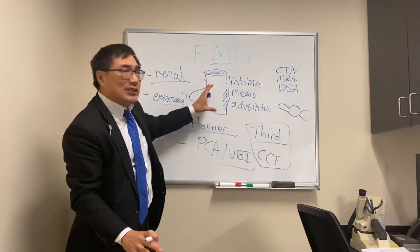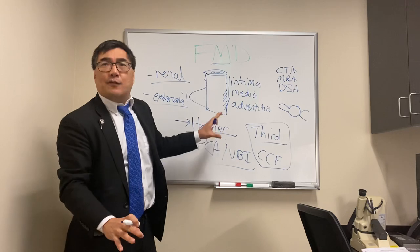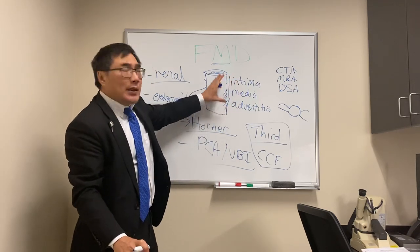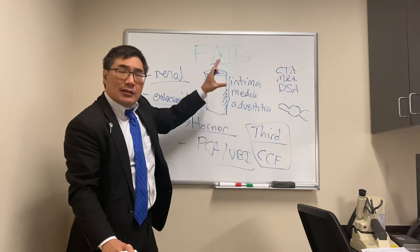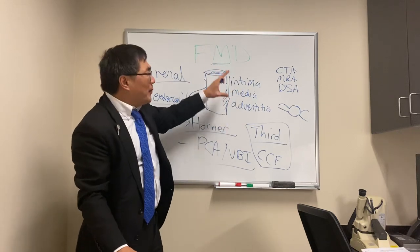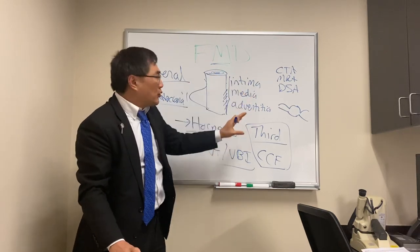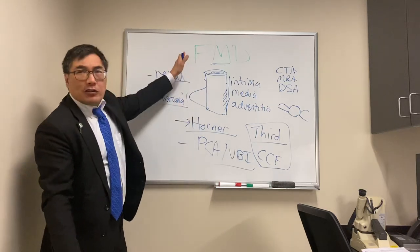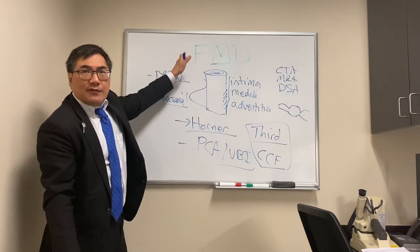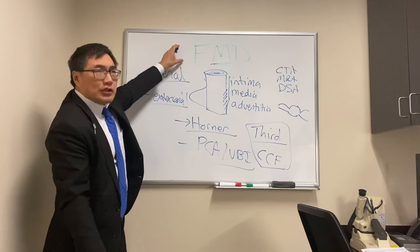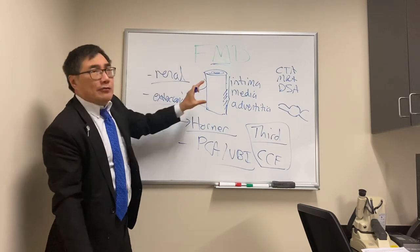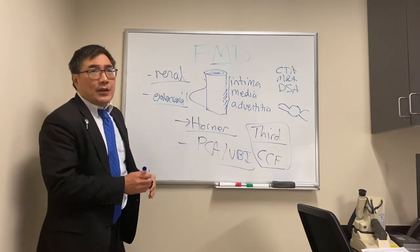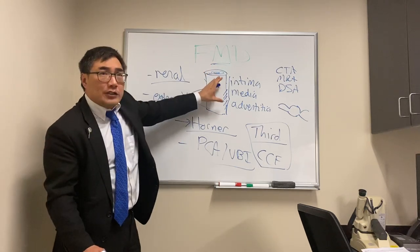The most common thing we have to be worried about is Ehlers-Danlos type 4, the vascular form, which is a collagen disorder. Marfan's is another consideration. These are the other diagnoses to think about in a patient who looks radiographically like fibromuscular dysplasia. There's no serologic test for FMD — it's a clinical and radiographic diagnosis.